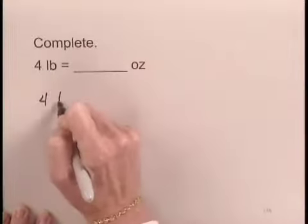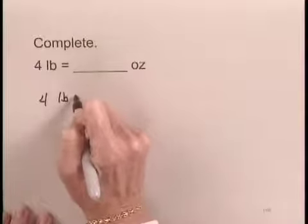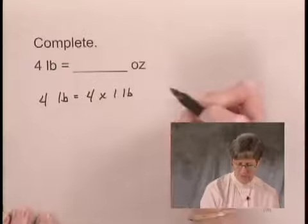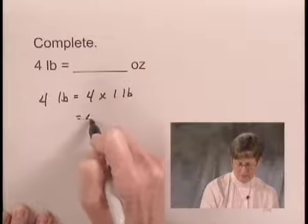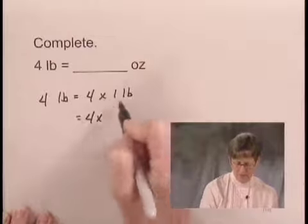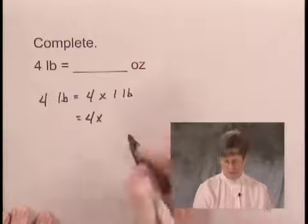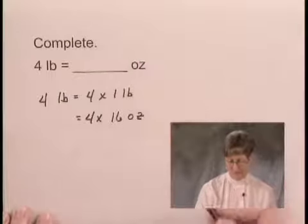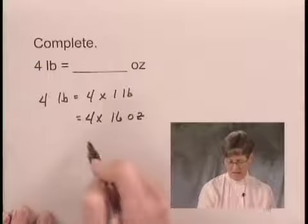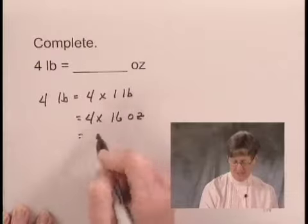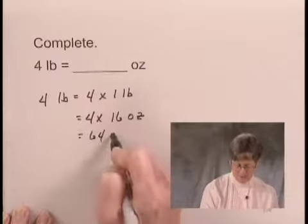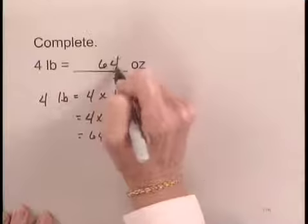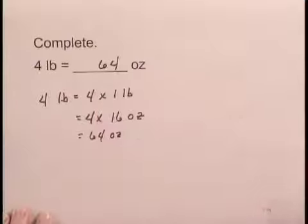Let's write 4 pounds, and I can write that as 4 times 1 pound. I know that 1 pound is equal to 16 ounces, so I can replace 1 pound with 16 ounces. And now 4 times 16 is 64, so we can say that 4 pounds is equal to 64 ounces.